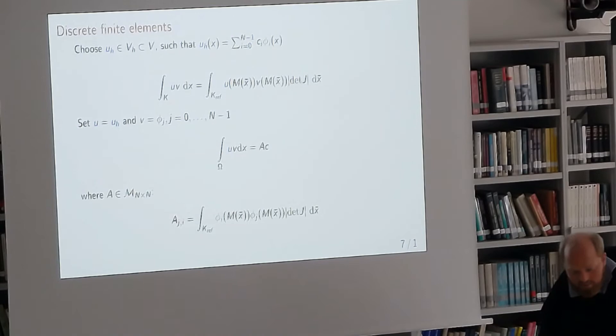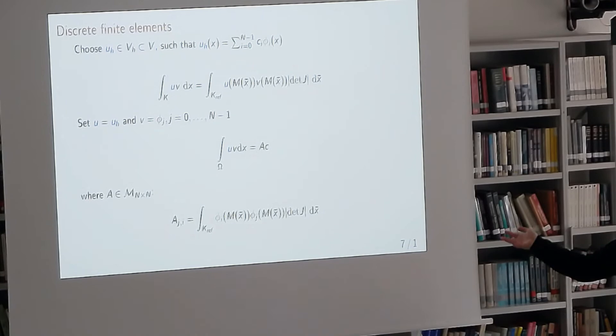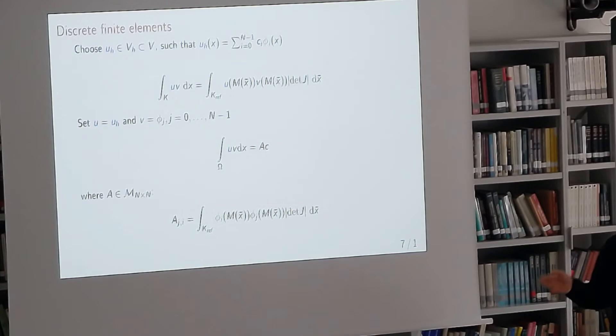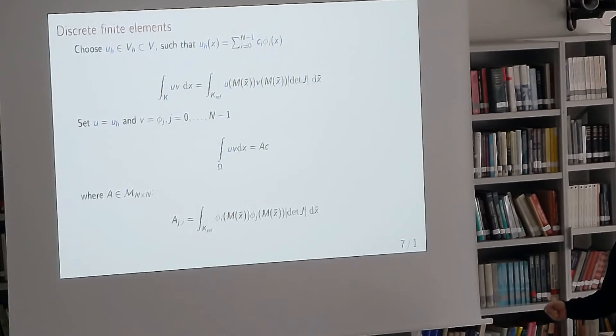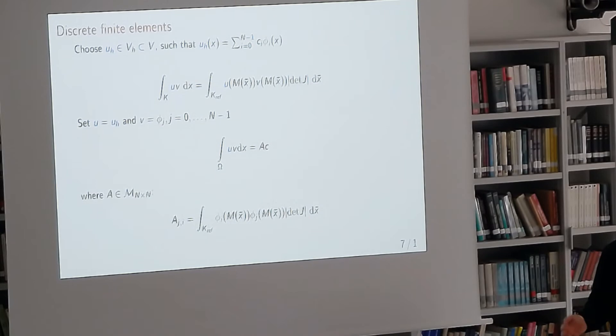Once we've chosen our basis functions, we can get a local element matrix with basis functions and the determinant of the mapping. Given any finite element or any weak form, we end up with some matrix and some vector. We would like to integrate these numerically by choosing a quadrature rule. You don't want to repeat this every time for every PDE, since you might want to solve variations — starting from Poisson, then heat equations, maybe with nonlinear boundary conditions. That's why you want a finite element library that does this for you.